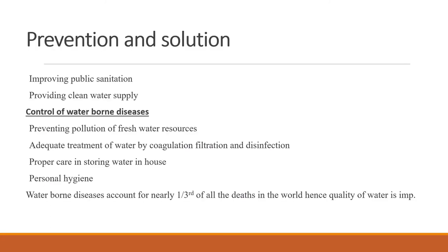Coming to prevention and solutions: we can prevent waterborne diseases by proper sanitation and providing clean water. Using water treatment plants, proper storage facilities, cleaning those storage facilities frequently to prevent algae growth, and maintaining personal hygiene all help in reducing waterborne diseases.